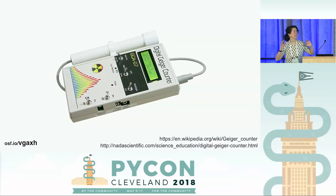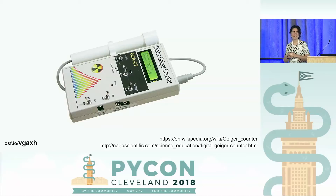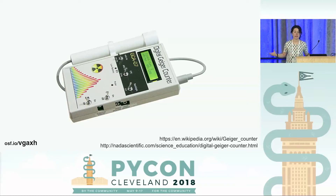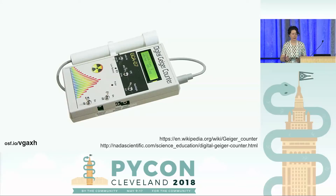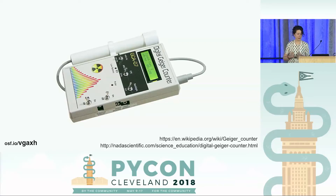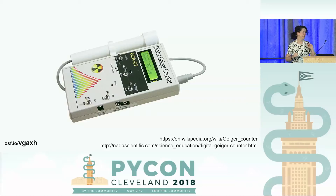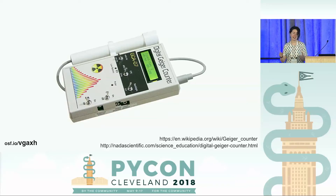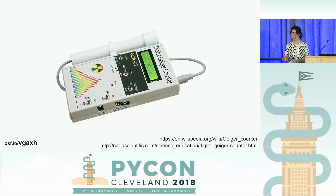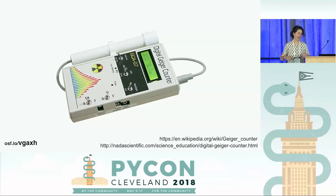One of the most famous examples of sonification is the Geiger counter. The Geiger counter is essentially a tube filled with gas, and that gas has high voltage going through it. Whenever a radioactive particle comes in contact with that gas, the gas conducts electricity, and that causes ionization — basically just a change in electrical charge. That ionization is detected by the Geiger counter, which then emits a little click and also shows up on the audio display. That is super useful because you get that feedback right in the moment you need it, rather than going back to the lab to analyze the data or staring at a display — you get feedback in real time with audio.